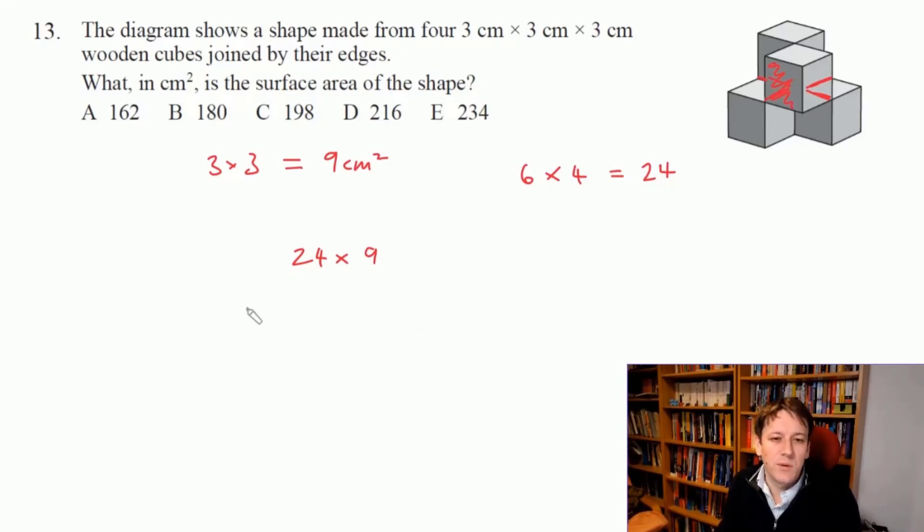Two ways of doing this: a lot of people would do 24 times 10 to get 240 and then subtract 24 to get 24 times 9, so that would give me 216.